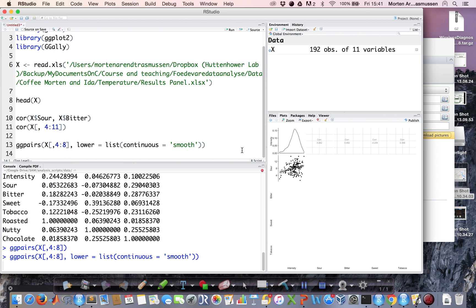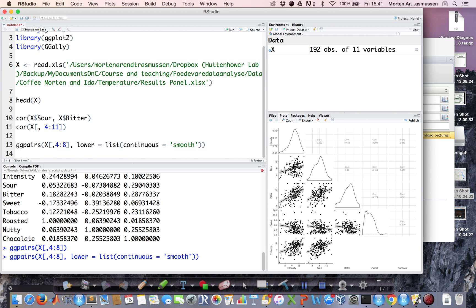We can make this plot nicer by adding tendency lines, continuous equals smooth. If we do this, we get the same plot, but now we have the tendency line in all the scatter plots. There are further ways you can customize this matrix plot to serve your purpose.